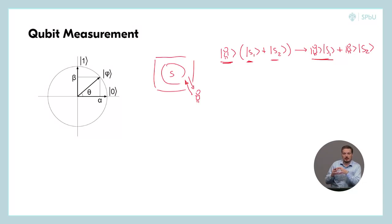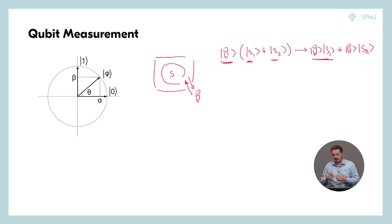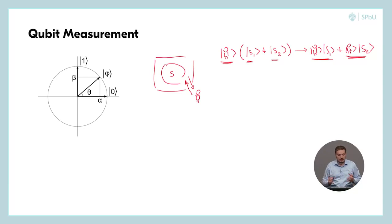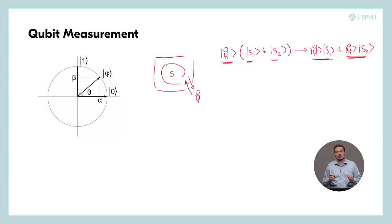When you choose a basis for this measurement, after observation you will always get one of the vectors of this basis as your measurement outcome. And since for one qubit there are only two possible such measurement outcomes — two vectors because the space is two-dimensional — that means that after measurement you will receive one bit of information.